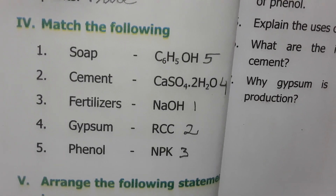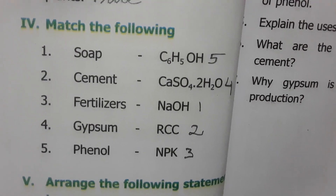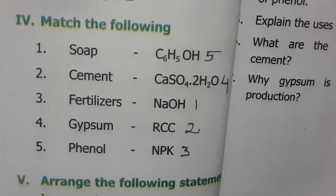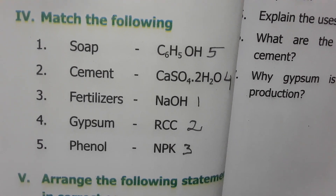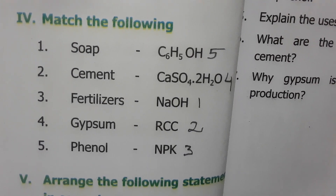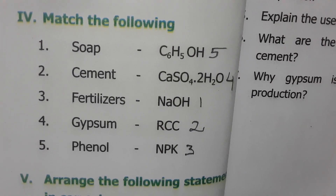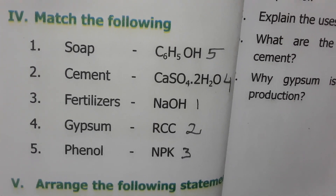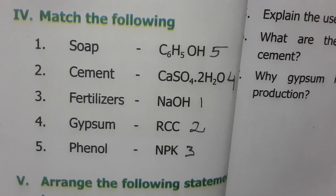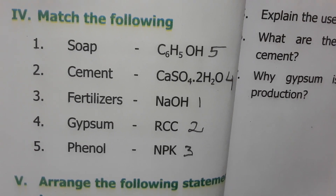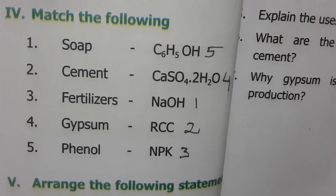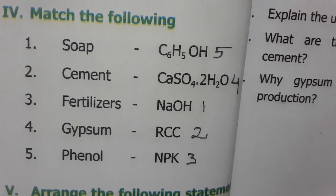Match the following: Soap is made using sodium hydroxide. Cement is calcium sulfate dihydrate (CaSO₄·2H₂O). Fertilizer corresponds to NPK — nitrogen, potassium, and phosphorus. Gypsum is used in cement. Phenol is C₆H₅OH.